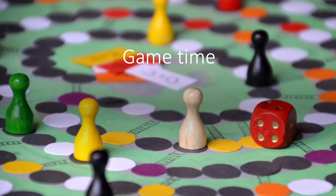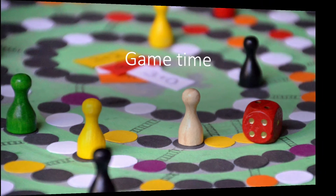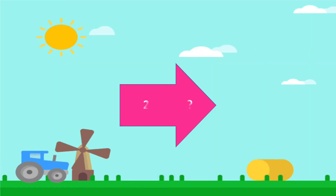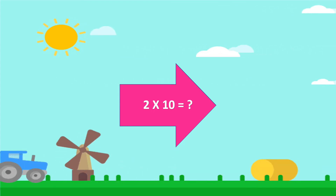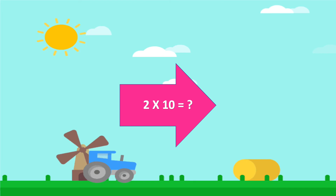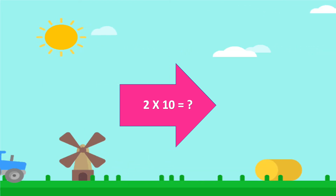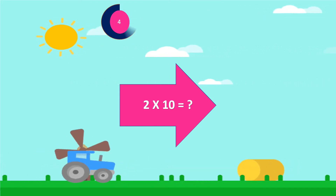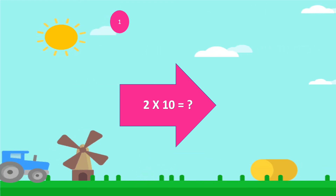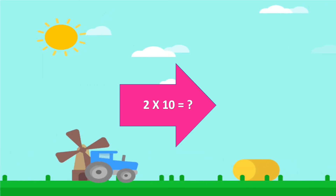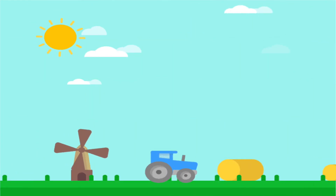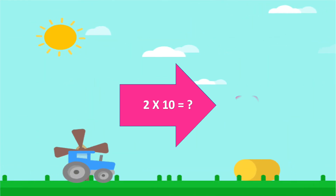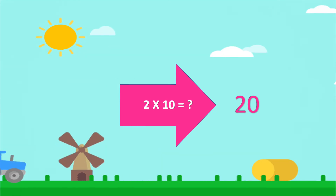It's game time! Let's have a game. The game question is: What is 2 × 10? You have no options — your time starts now. The correct answer is 20. Very good!